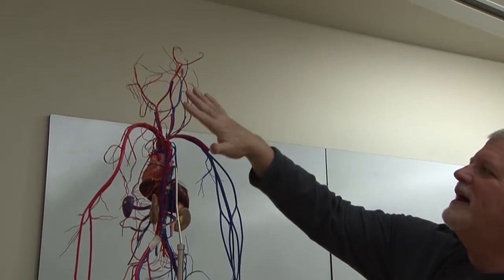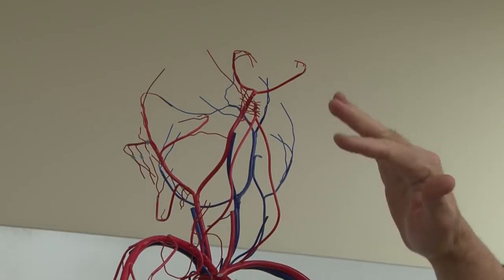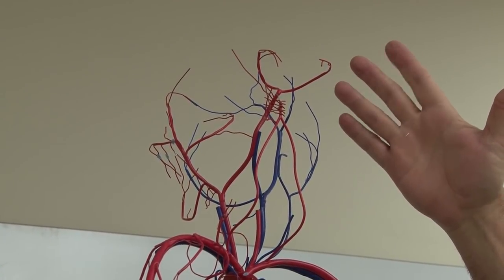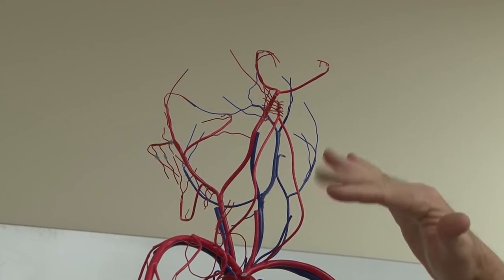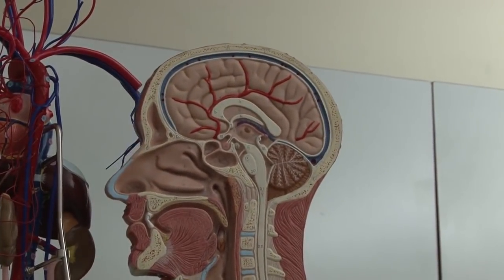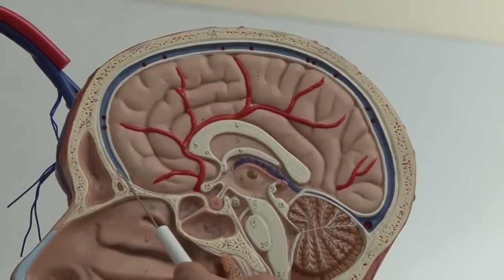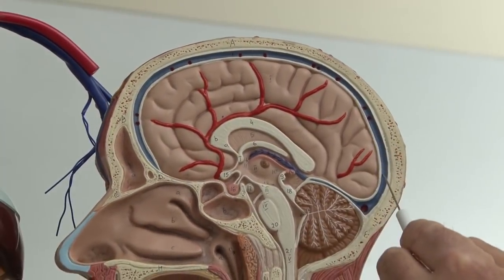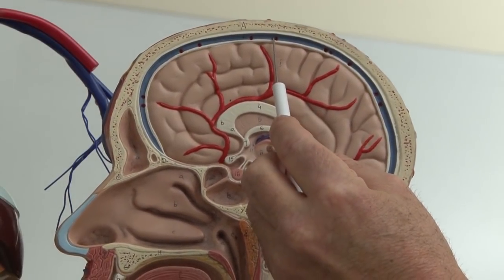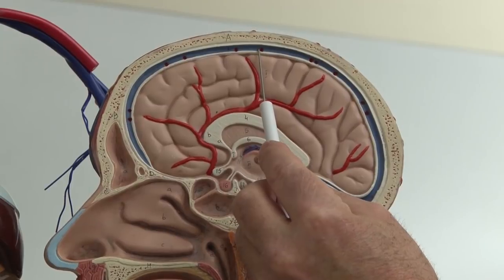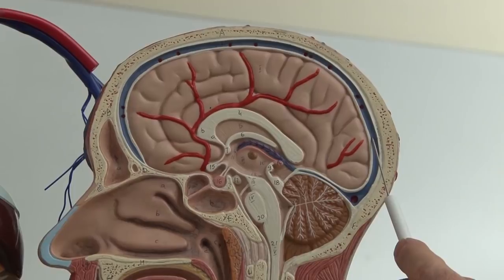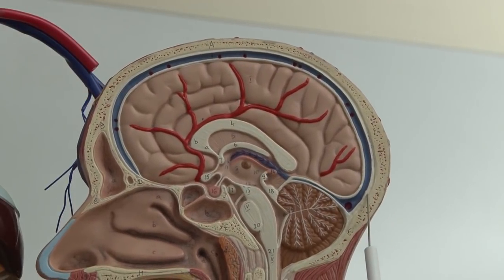We just covered the arterial supply to the inside of the brain. Now we'll look at the venous drainage back to the heart. At the top of the brain, sitting in the longitudinal fissure, we have a blood vessel where blood flows from anterior to posterior — this is the superior sagittal sinus. When we covered bones, there was a groove this vessel creates in the skull called the superior sagittal sulcus.